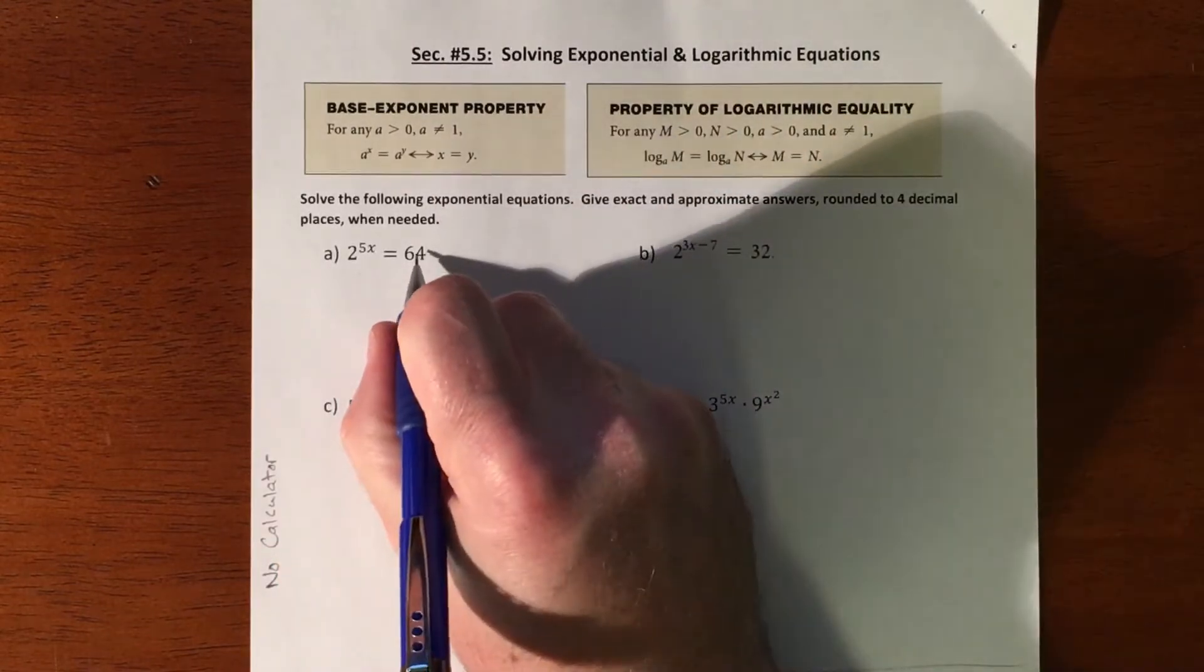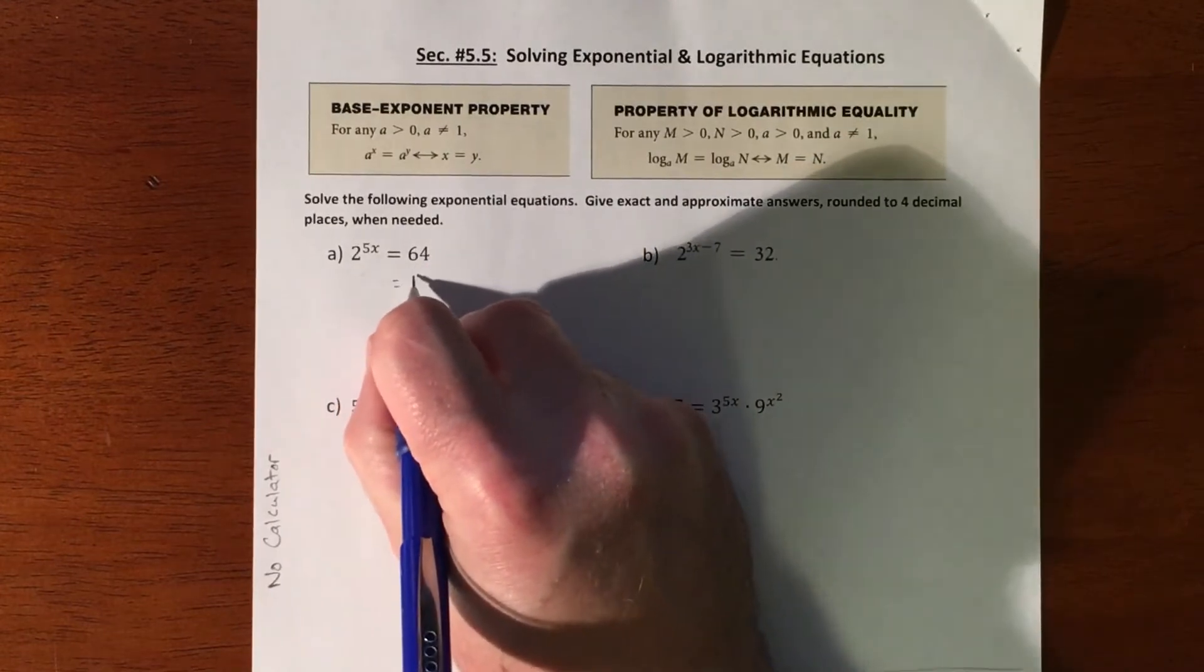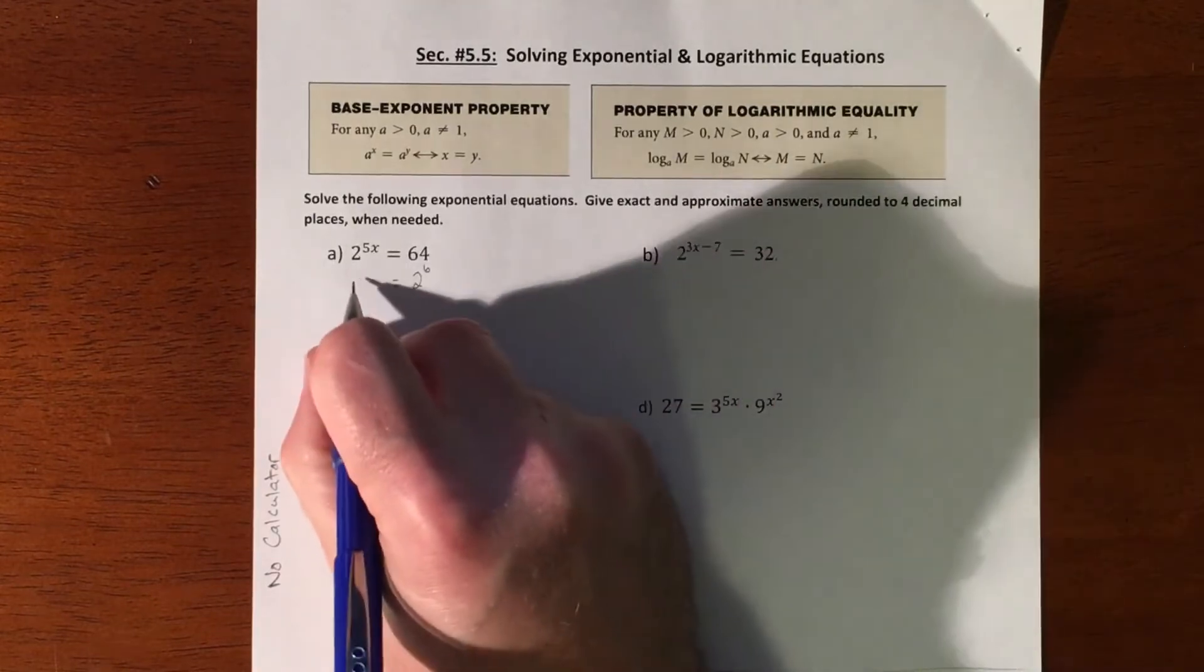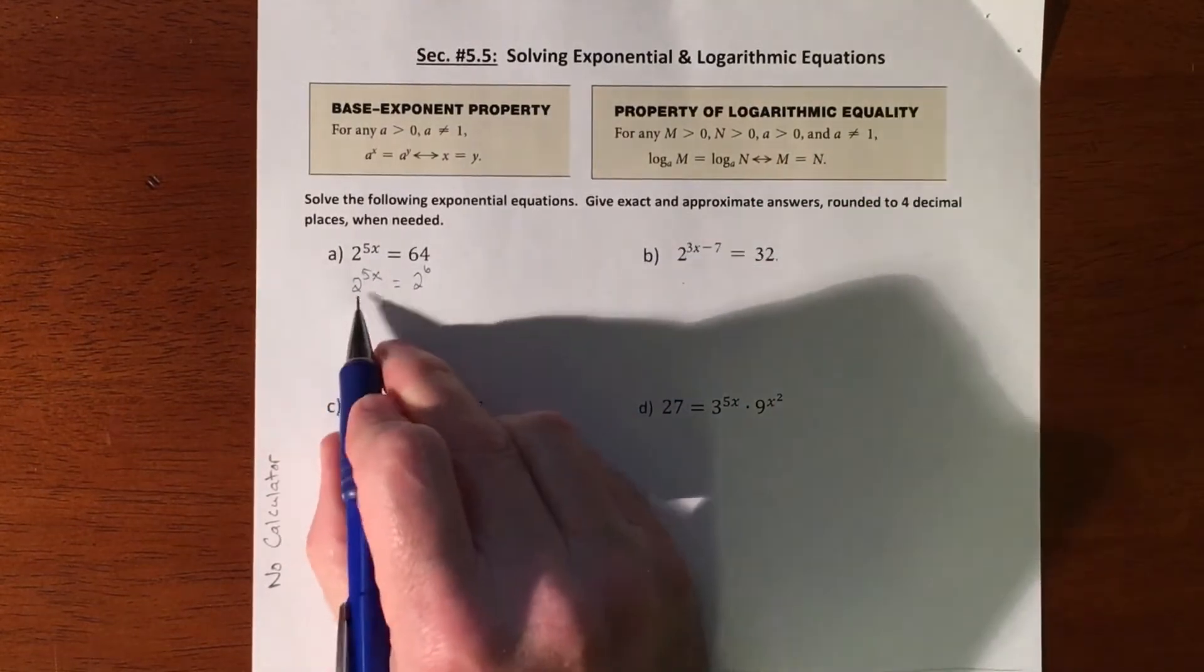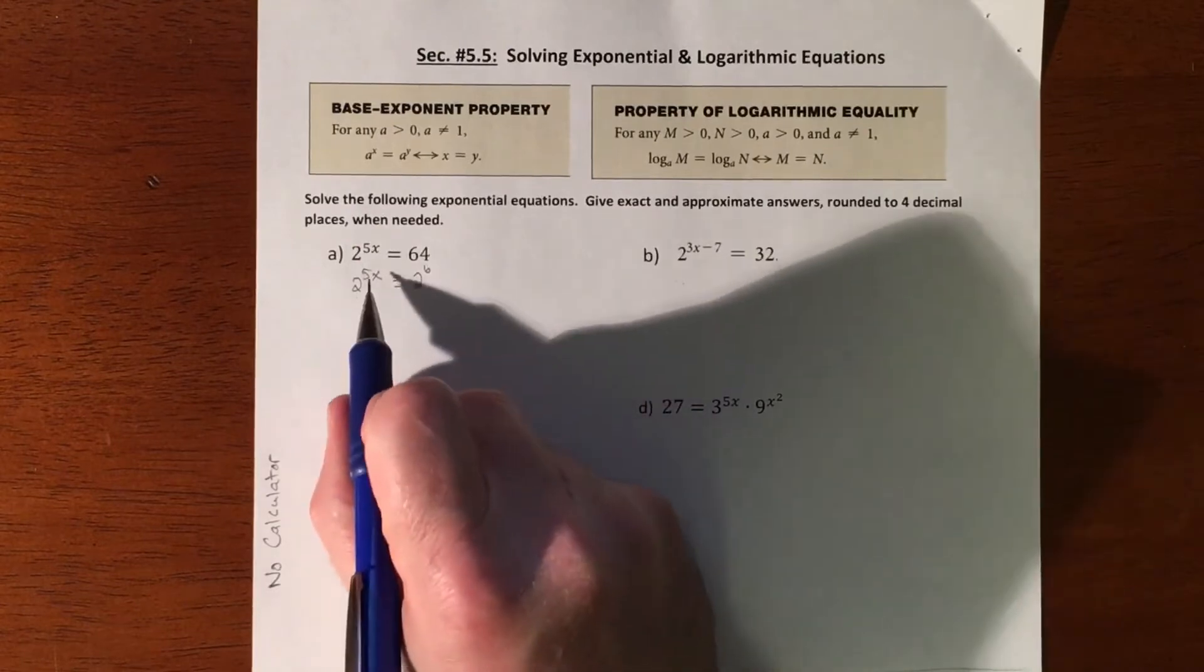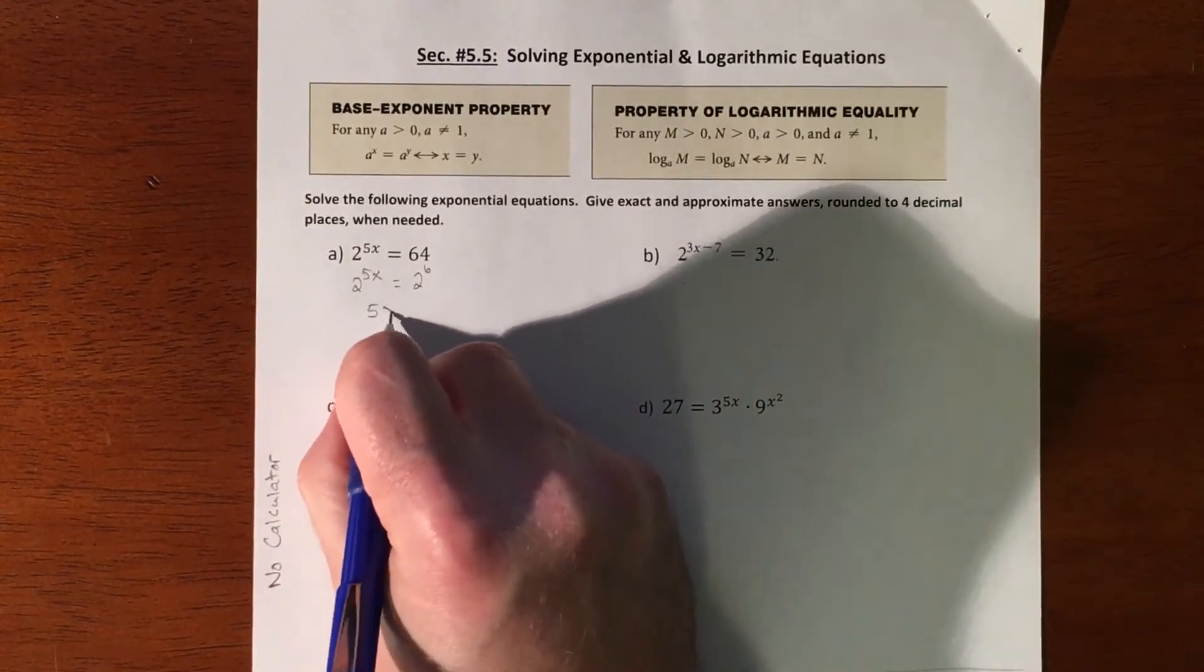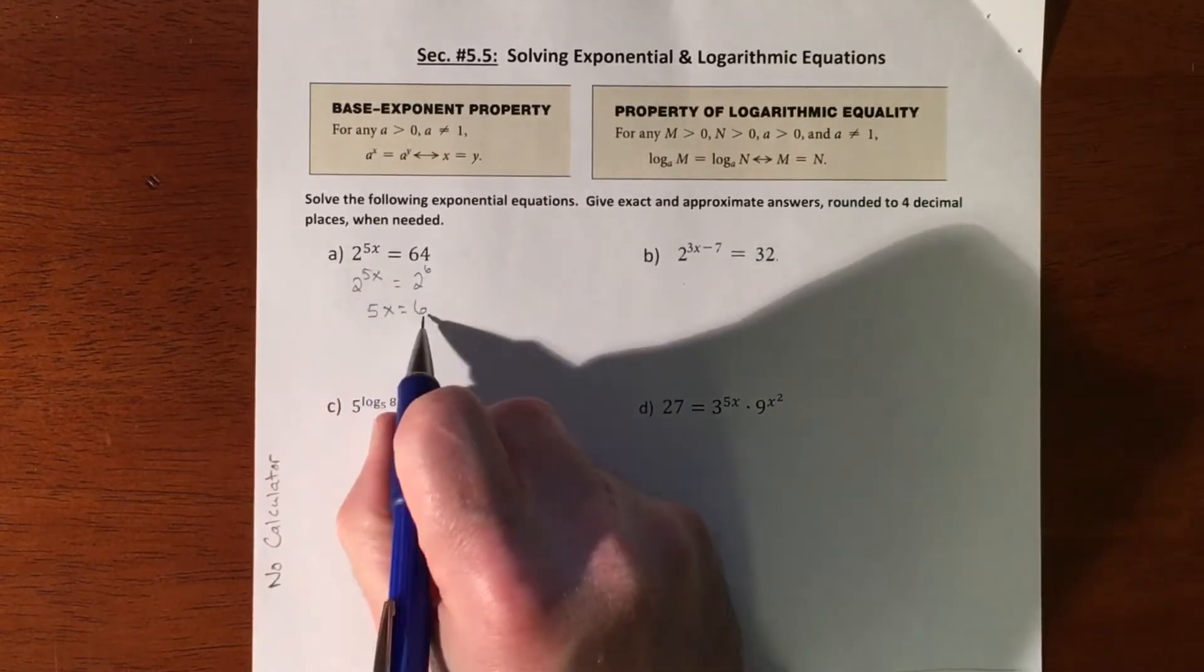So here's what I mean by that. 64 is just a bunch of twos, so 64 is 2 to the sixth. Well, this is 2 to the 5x. So once you get the bases to match, you don't care about the bases at all anymore because now the only way that these two sides are gonna equal each other is that this exponent matches this exponent.